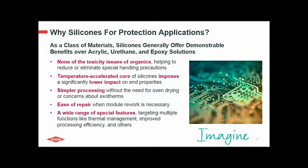Silicones have great hydrostability and strong resistance to a wide range of chemicals and especially UV radiation. They do not have the toxicity issues of organics, which helps reduce or eliminate special handling precautions. Heat curing a silicone does not impose a significantly lower impact on mechanical properties compared to organics. They are also simpler to process without the need for oven drying or concerns about exotherms. And if you need to rework your module, silicones are quite easy to repair. Overall, silicones provide a wide range of special features targeting multiple functions like thermal management and improved processing efficiency.